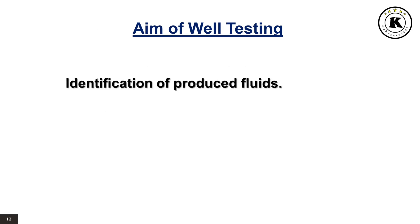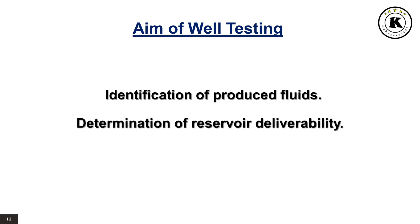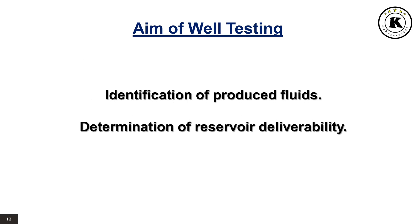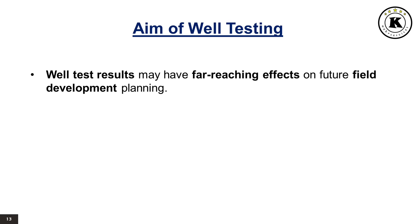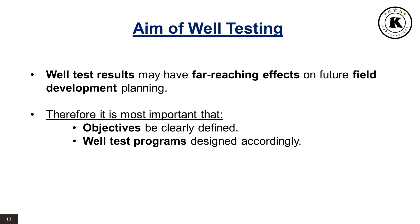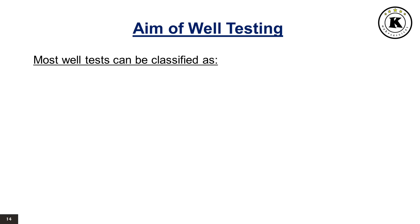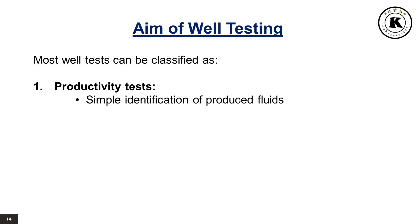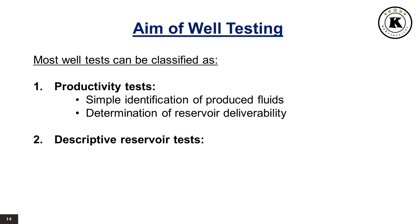Aim of well testing. The aim of well testing is the identification of the produced fluids and the determination of the reservoir deliverability. Well test results may have far-reaching effects on future field development planning. Therefore, it is most important that objectives are clearly defined and the well test programs are designed accordingly. Most well tests can be classified as productivity tests — a simple identification of produced fluids and determination of reservoir deliverability — or descriptive reservoir tests, which consist of definition of complex reservoir features.